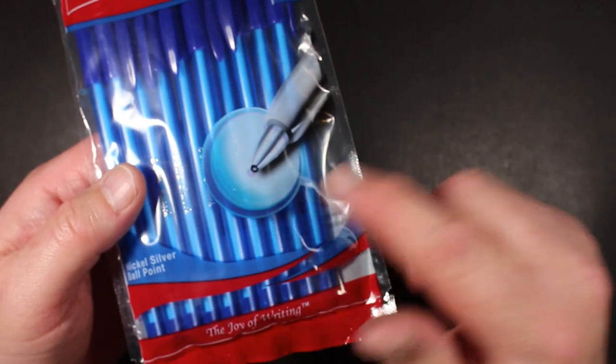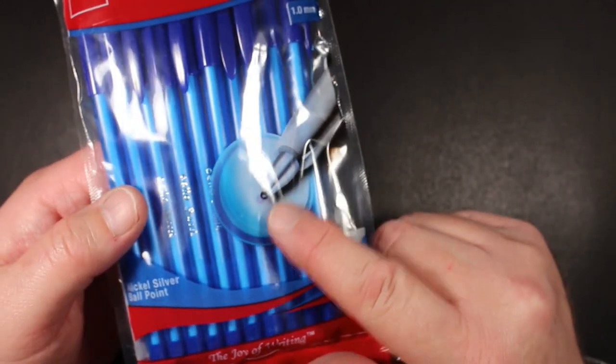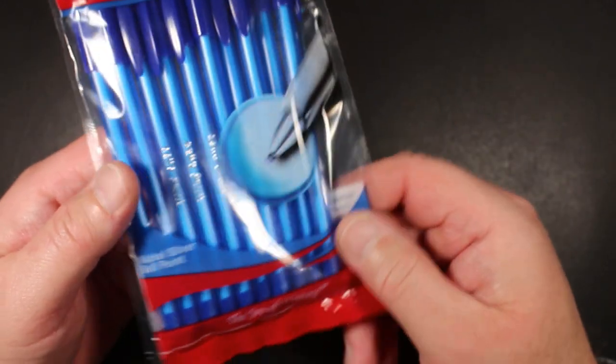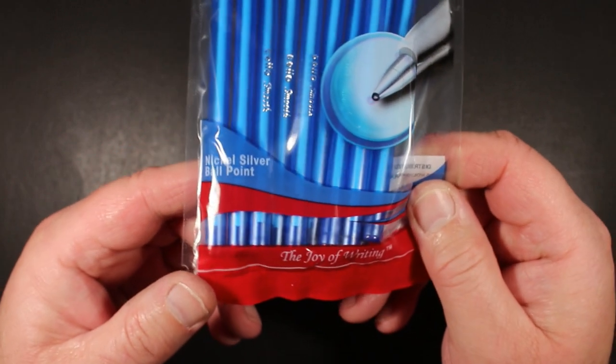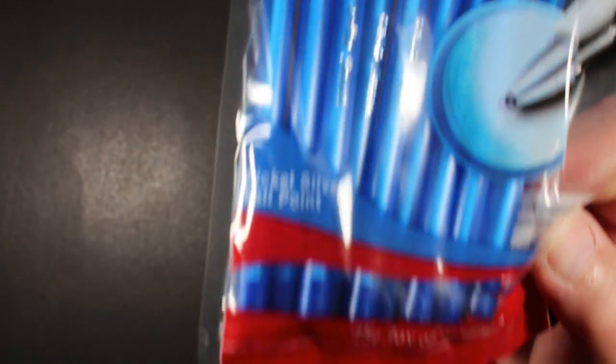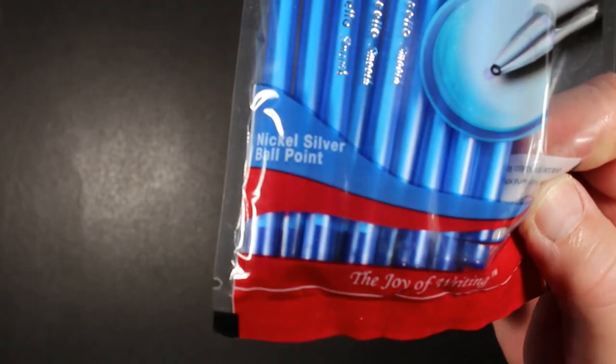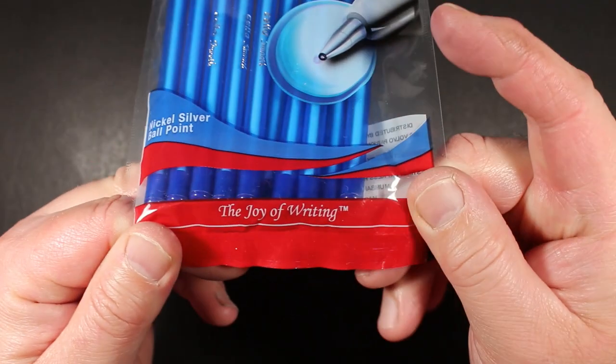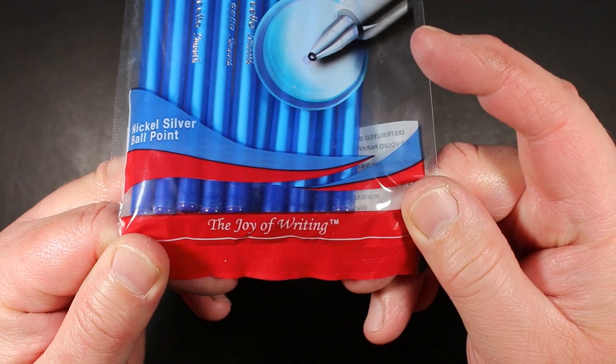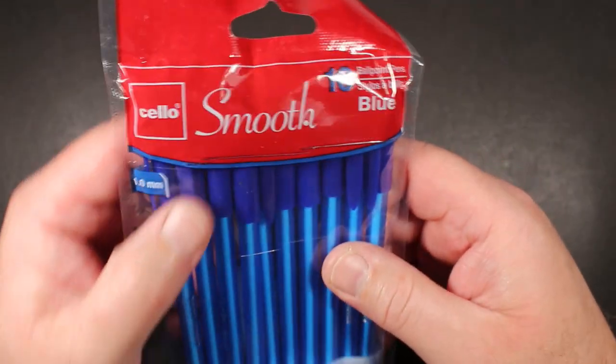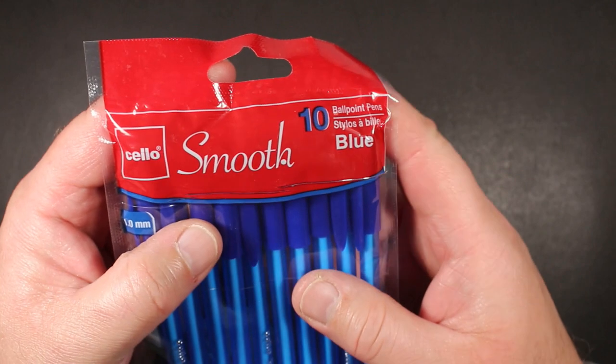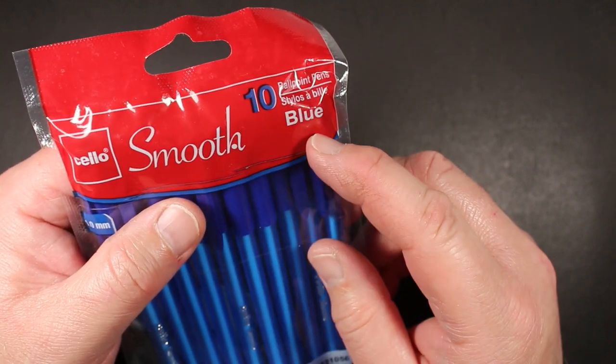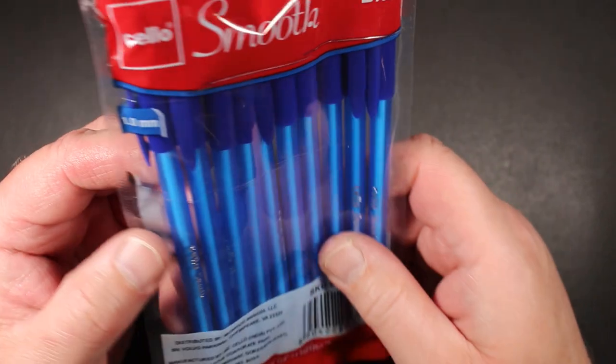They have a blue barrel, close-up here of the tip. It says nickel silver ballpoint. At the bottom it says the joy of writing. So Cello Smooth, ten ballpoint pens in blue on the back.